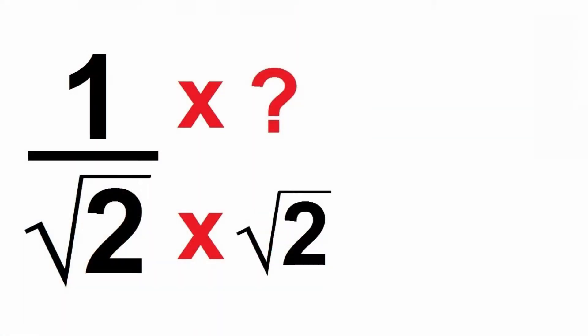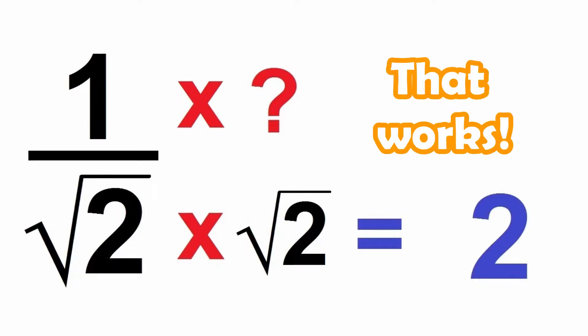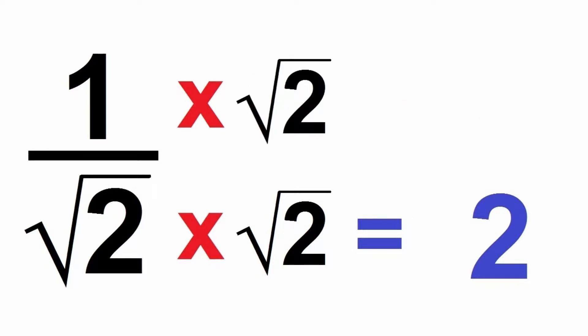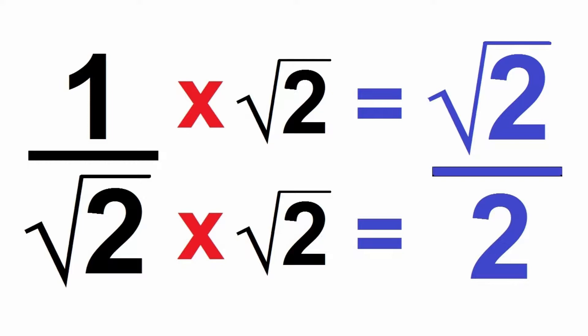What could we multiply the square root of 2 with in order to cancel out the square root? What if we used another root 2? The square root of 2 multiplied by itself would just give us 2. That works. That means we'll have to multiply the numerator by the square root of 2 as well. We'll have the square root of 2 over 2. But that's okay, we just wanted to rationalize the denominator, so the fact that the numerator is irrational isn't a problem.